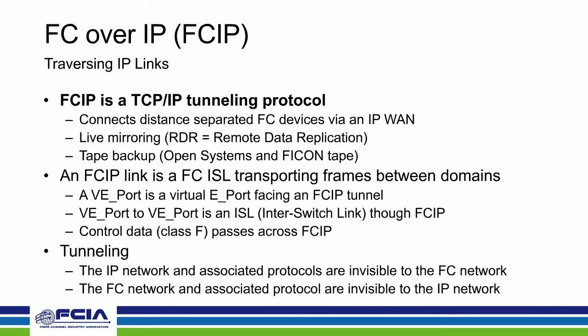The switches on each end — which could be extension boxes or edge fabrics — are connected via an FCIP ISL. It's still an ISL. A VE port is a virtual E-port, and you're really just connecting two E-ports across an IP link, which means control traffic such as Class F traffic has to pass across it as well. The Fiber Channel traffic doesn't know it's going through an IP network, and the IP network doesn't know a Fiber Channel SAN is passing through it — they're referred to as 'ships in the dark.'